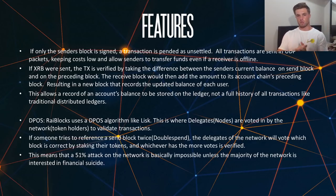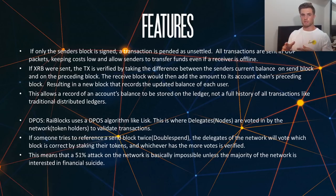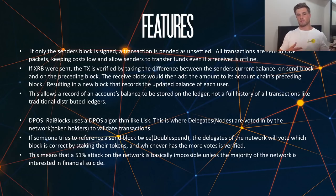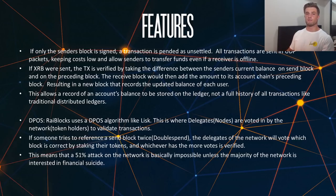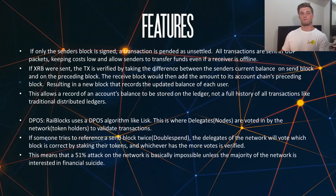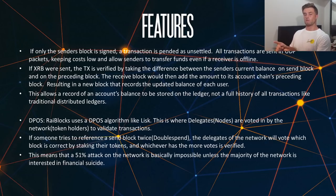All transactions are sent in UDP packets, which are streamlined bits of data — much more streamlined and less storage-intensive than packets used by other blockchains. This keeps costs low and allows senders to transfer funds even if the receiver is offline. If XRB is sent, the transaction is verified by taking the difference from the sender's current balance on their send block and on the preceding block, doing a calculation between the two blocks to calculate the difference.